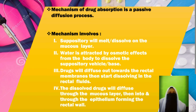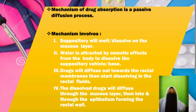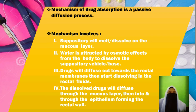Absorption of drug is a passive diffusion process. Steps: First, the suppository will melt and dissolve on the mucous layer. Second, water is attracted by osmotic effect from the body to dissolve the suppository vehicle or base. Third, the drug will diffuse toward the rectal membranes, then start dissolving in the rectal fluid. Lastly, the dissolved drug will diffuse through the mucous layer and then through the epithelium into the rectal fluid.